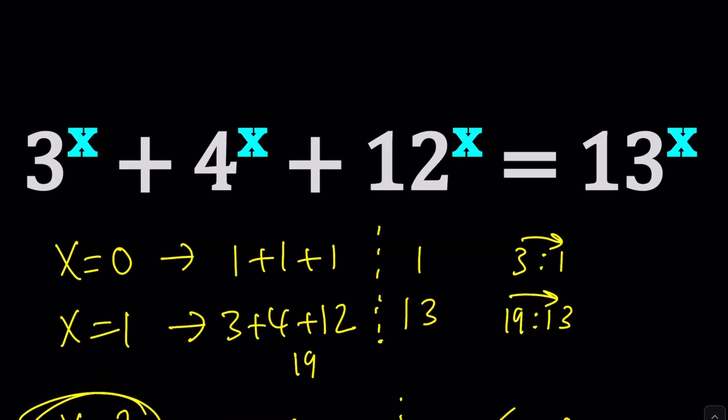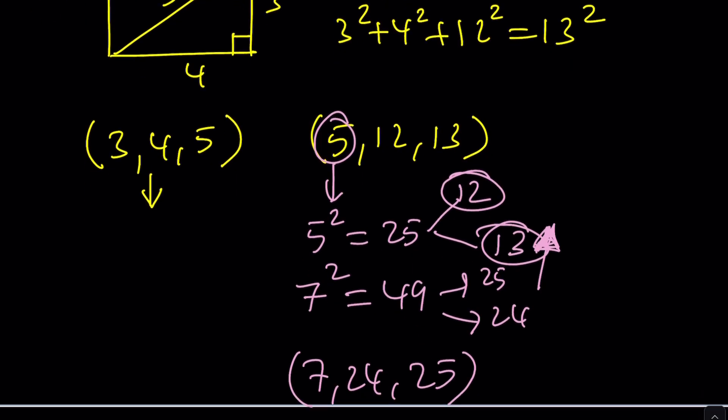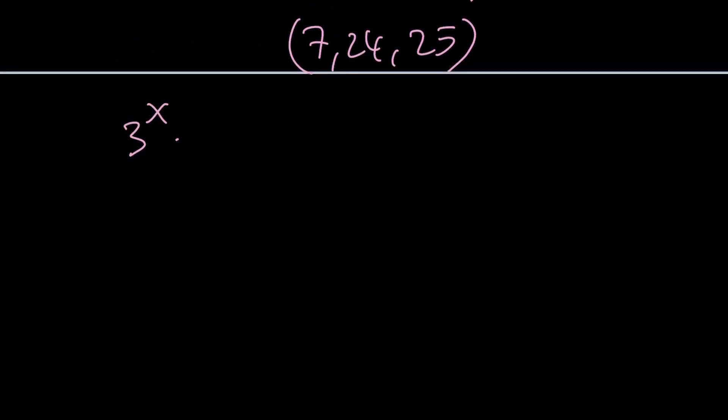Guess and check worked. We have some boundaries: if x is negative it's not going to work, and if x is greater than 2 probably not going to work either, because one side is going to get bigger and they'll definitely be different. But how do we prove in general that we have a single solution? What we do — which is something we almost always do with exponential equations like this — is divide both sides by 13 to the power x.